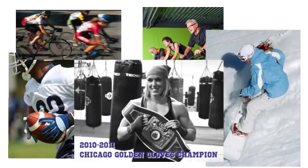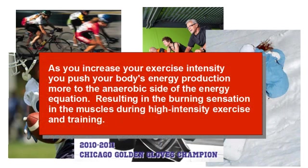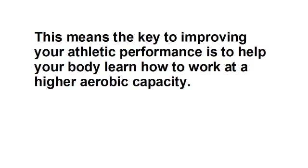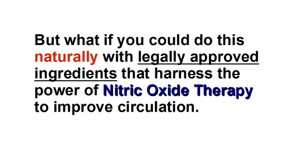Every athletic activity is some combination of anaerobic and aerobic respiration. As you increase your exercise intensity, you push your body's energy production more to the anaerobic side of the energy equation, resulting in the burning sensation in the muscles during high-intensity exercise and training. This means the key to improving your athletic performance is to help your body learn how to work at a higher aerobic capacity. Some athletes do this illegally by blood doping, but what if you could do this naturally with legally approved ingredients that harness the power of nitric oxide therapy to improve circulation?